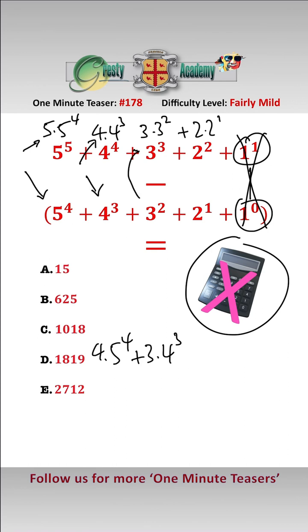We have 3 times 3^2, take away 1 times 3^2, which is 2 times 3^2, and we have 2 times 2^1, take away 1 times 2^1, which gives us 1 times 2^1.